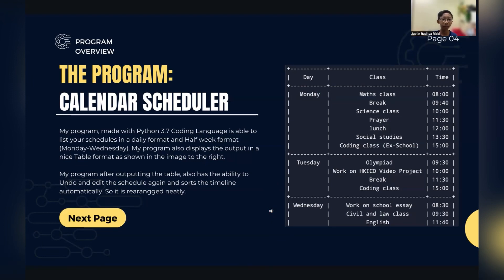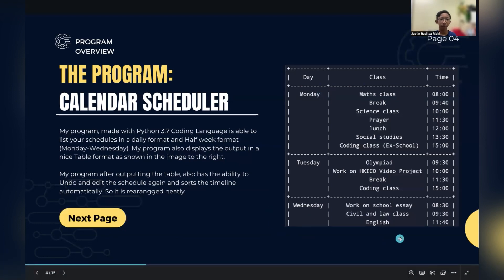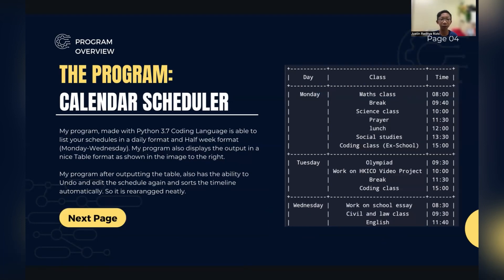The program is made with Python 3.7 and is able to list your schedule in a daily and half-week format from Monday to Wednesday. My program also displays the output in a nice table format as shown in the image. Additionally, after opening the table, it has the ability to undo and edit the schedule again, and sorts the timeline automatically so it is rearranged neatly.